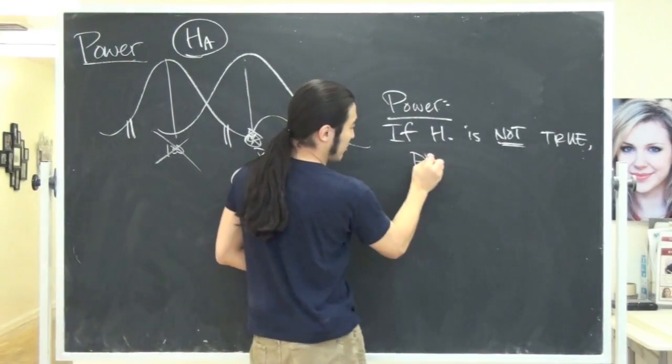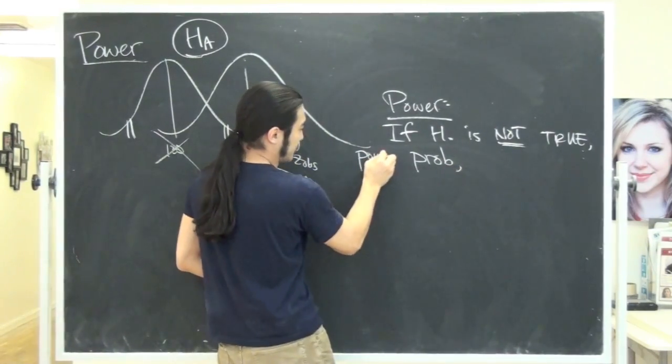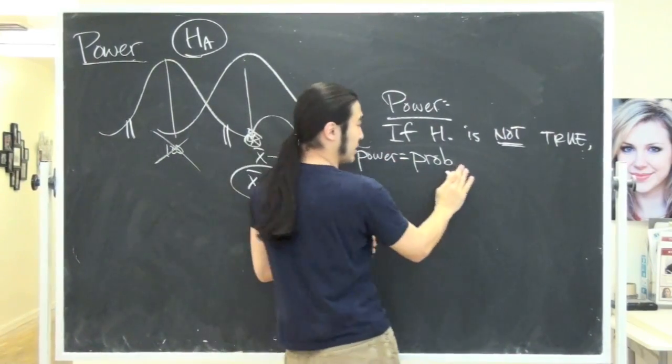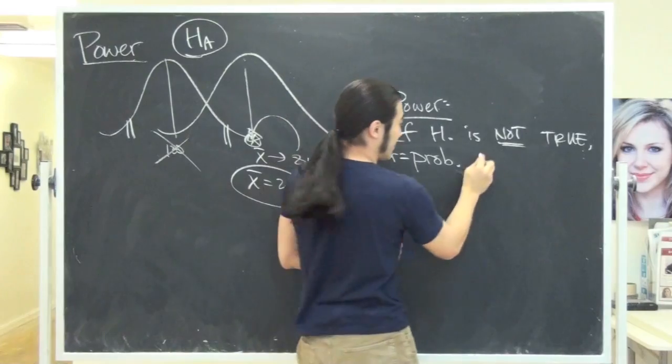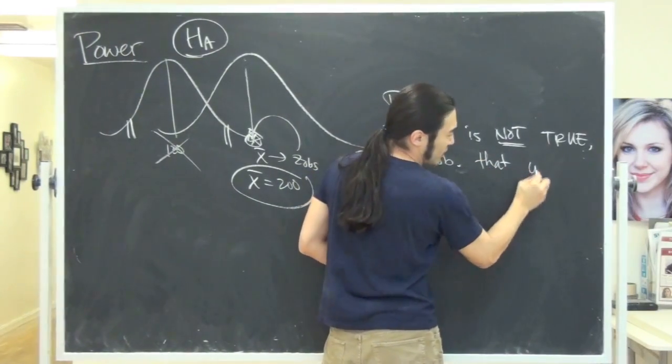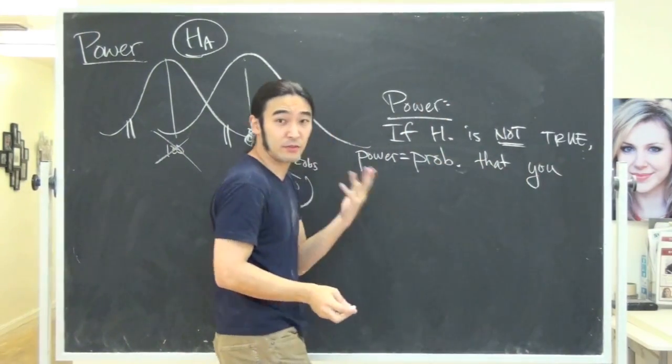So power is the probability, so power equals the probability that you would notice that. Well, so what is noticing? That you would reject the null.